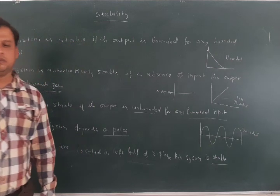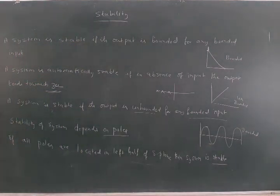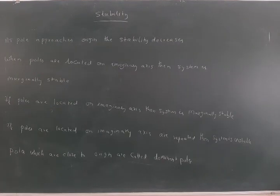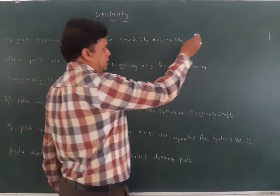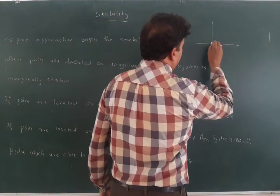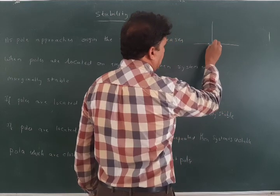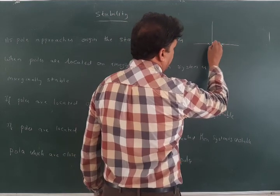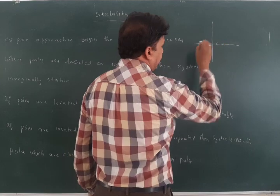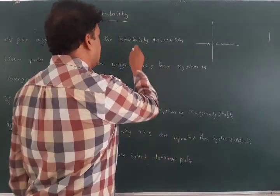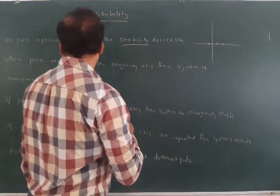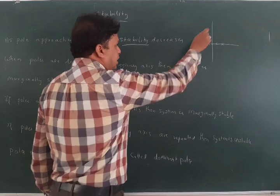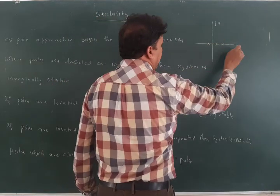As the pole approaches the origin, the stability decreases. If the pole is near to the origin, then the stability of the system decreases — this is a point to be remembered.